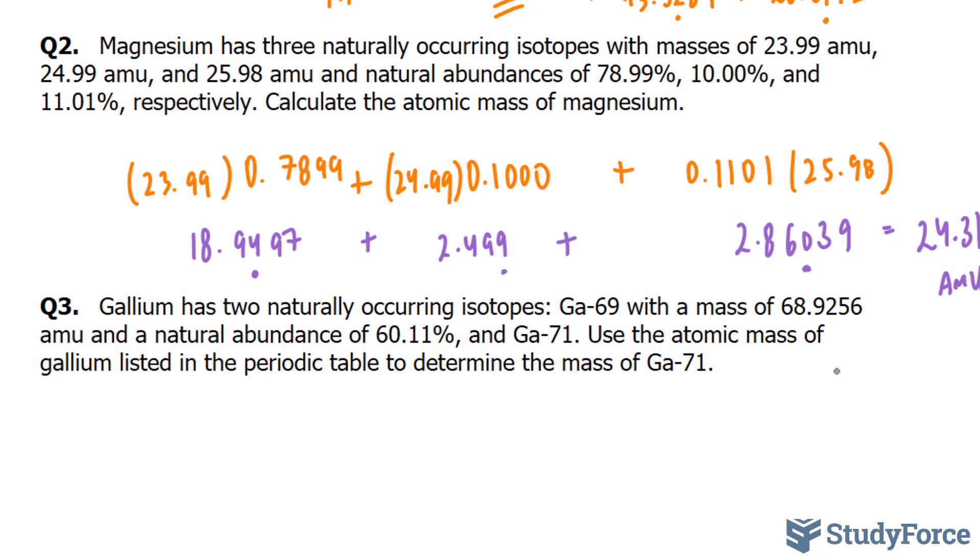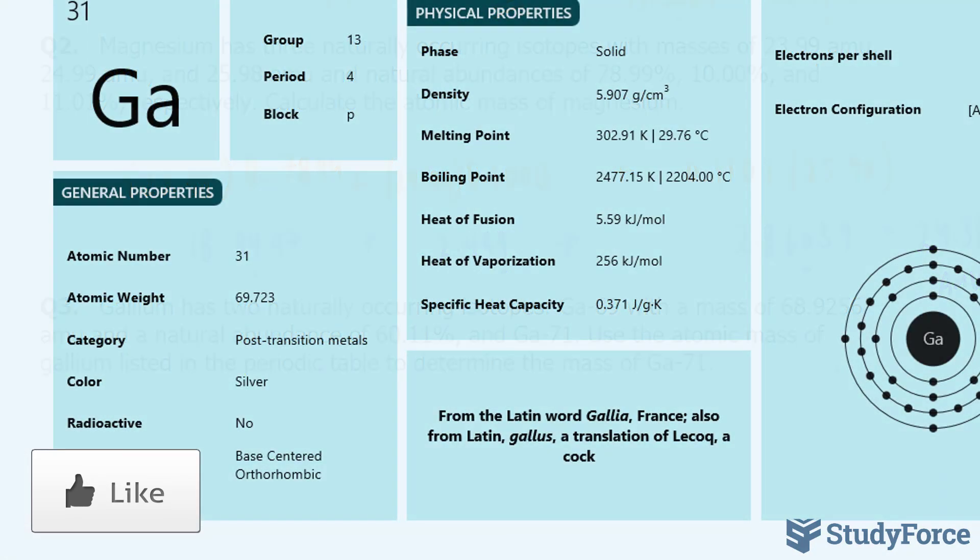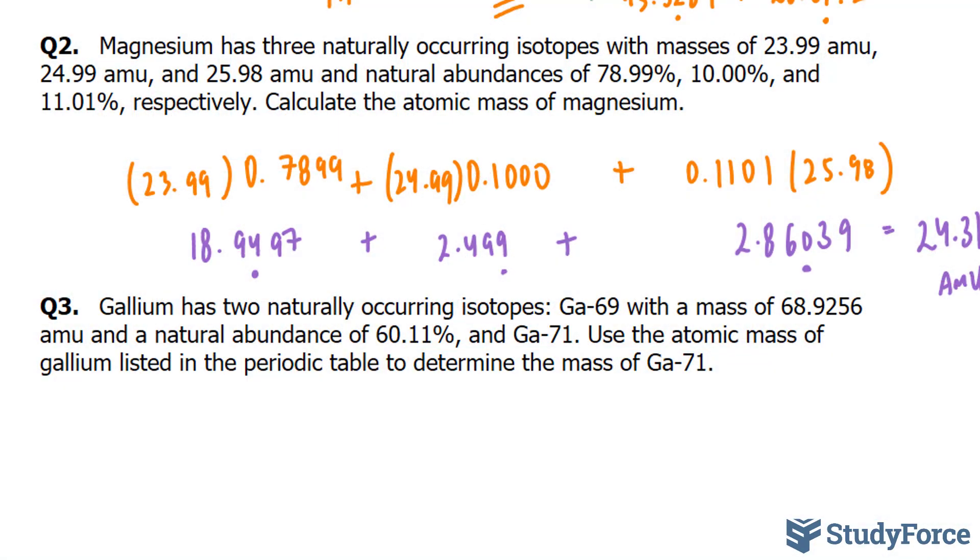To find the atomic mass for this particular question, we'll need to combine our knowledge in chemistry with our knowledge in algebra. First, let's find out what the atomic mass unit of gallium is according to the periodic table. As you can see here, the atomic weight of gallium is 69.723. So let's write that down, 69.723 amu.